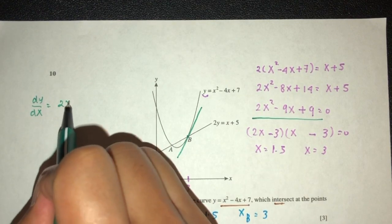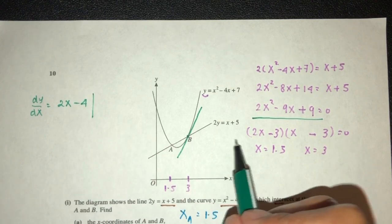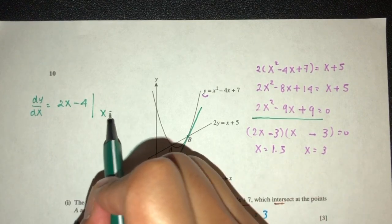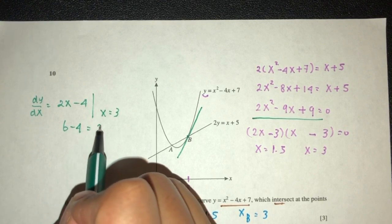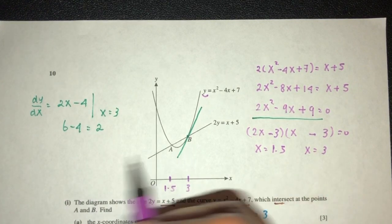That is, 2x minus 4. At the value of B, B's x value is equal to 3. Replace, you will have 6 minus 4. That will be 2. So now, we have a passing point B,